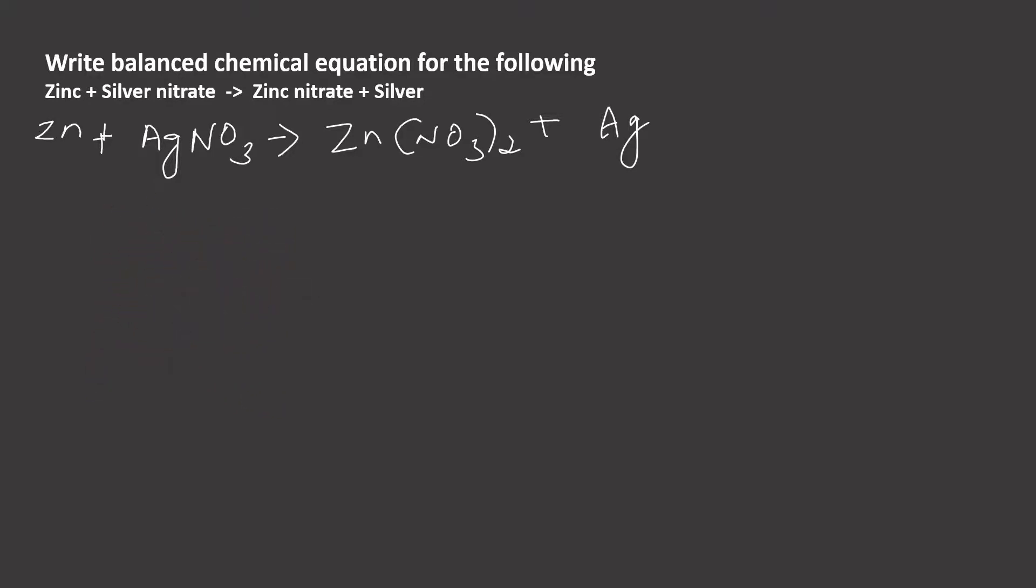In this equation, you can see there is a presence of polyatomic ions, nitrate ions. That is also both in left-hand side and right-hand side. It is present without any disturbance in their structure, so we can take it as a single unit.